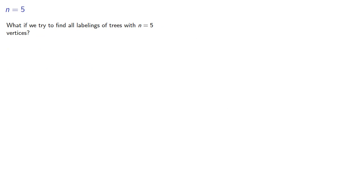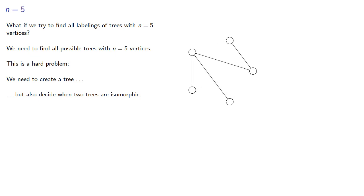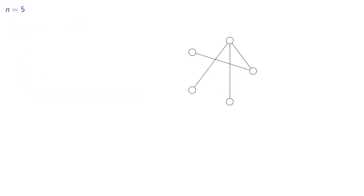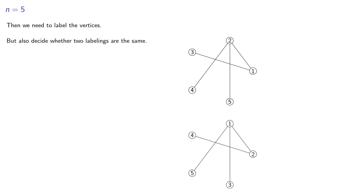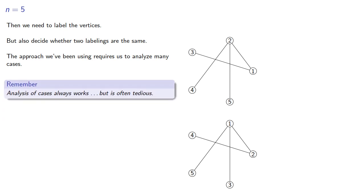What if we try to find all labelings of trees with n equals 5 vertices? We need to find all possible trees with n equals 5 vertices. And this is a hard problem. We need to create a tree, but also decide when two trees are isomorphic. But wait, there's more. Actually, that's not a good thing. We need to label the vertices, but also decide whether two labelings are the same. So the problem is the approach we've been using requires us to analyze many cases. So analysis of cases always works, but is often tedious. And so we might ask the question, is there a better way?